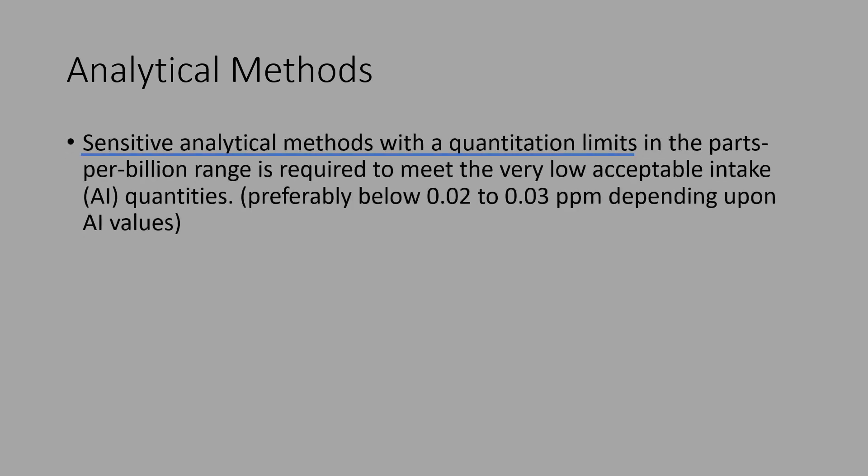Sensitive analytical methods with quantitation limits in the parts-per-billion range are required to meet the very low acceptable intake quantities — preferably below 0.02 ppm to 0.03 ppm, depending upon the acceptable intake values. The analytical methods have to be sensitive enough to establish very low LOQs in the 0.02 to 0.03 ppm range. The signal-to-noise ratio should be well understood, as it determines the influence of noise levels on the relative deviation of measurement.